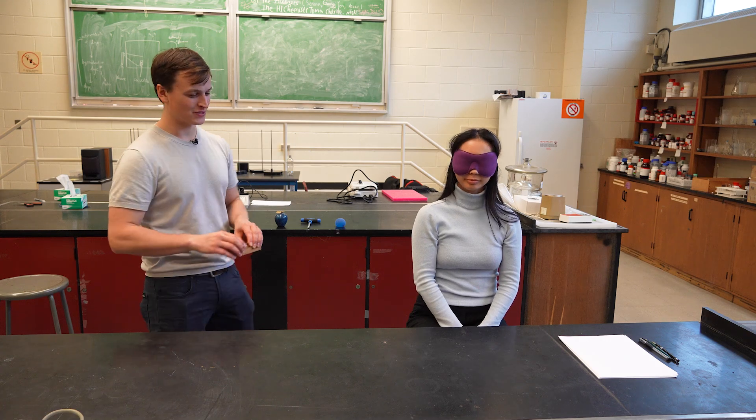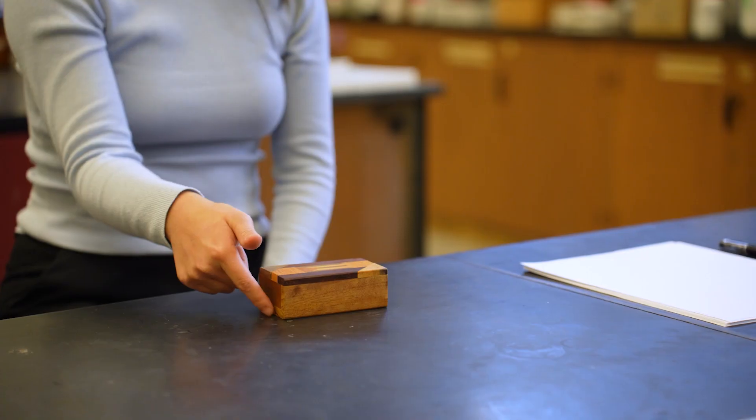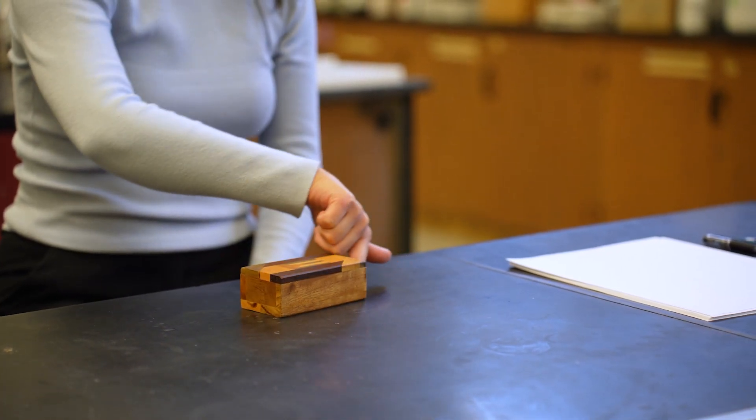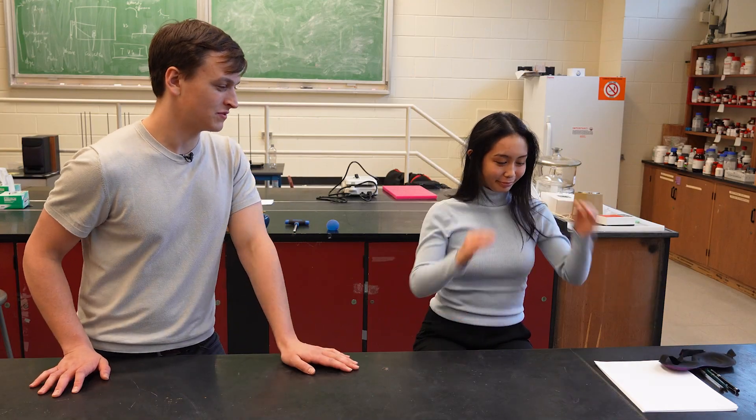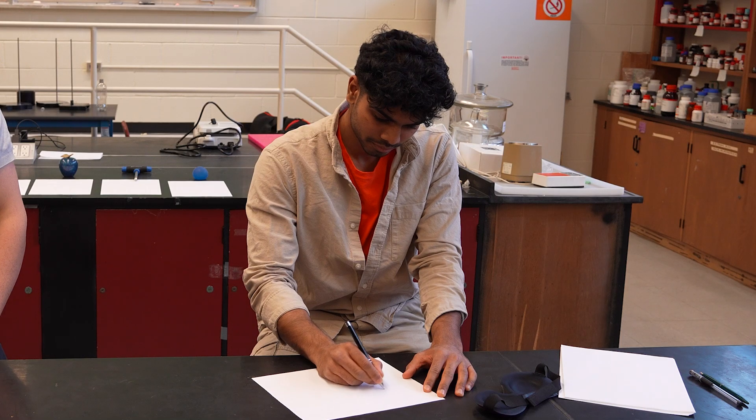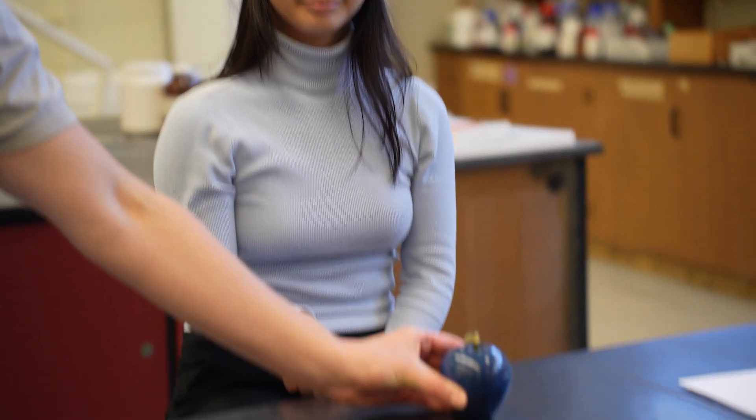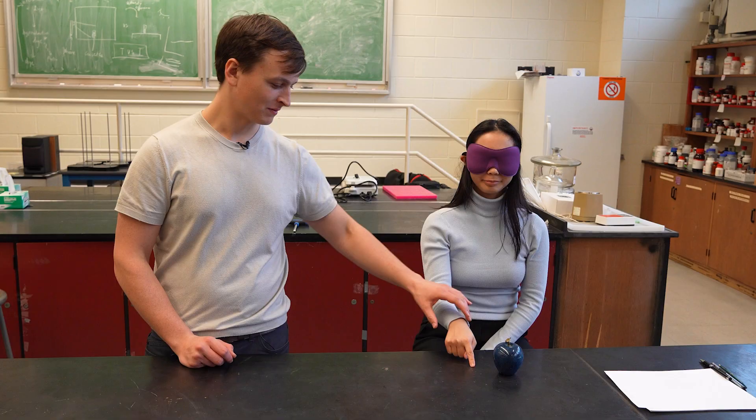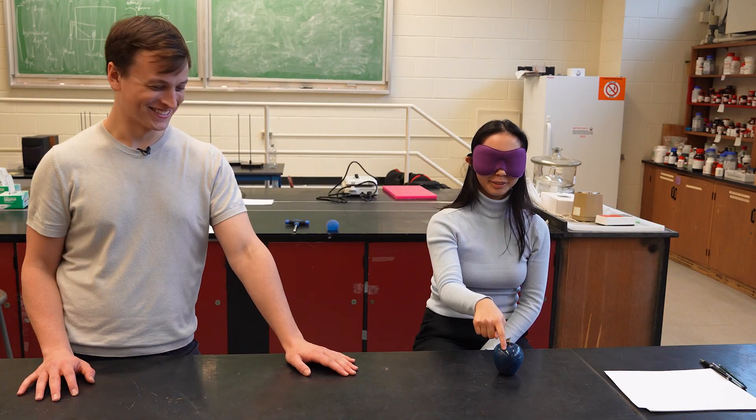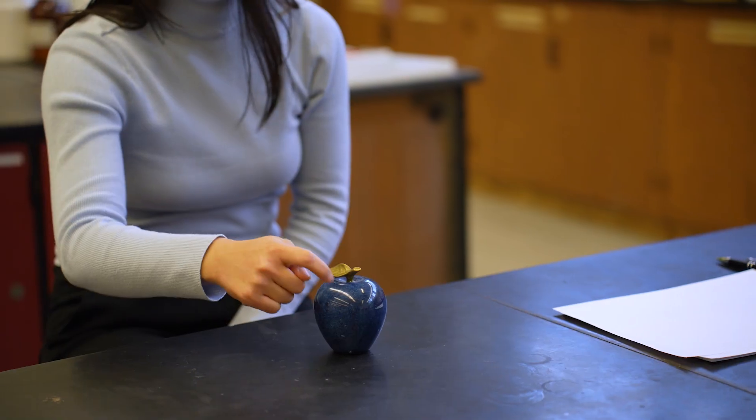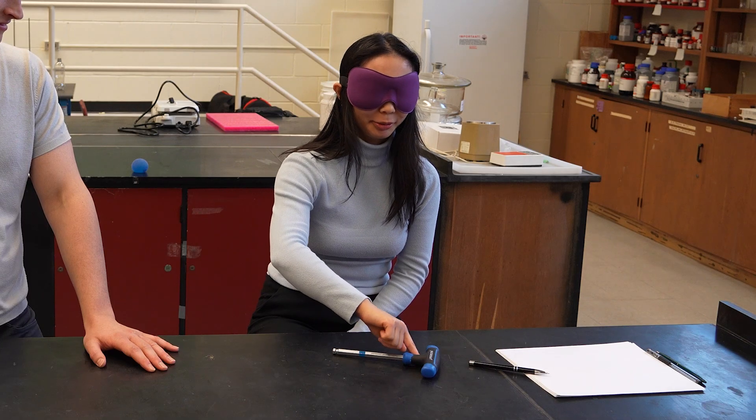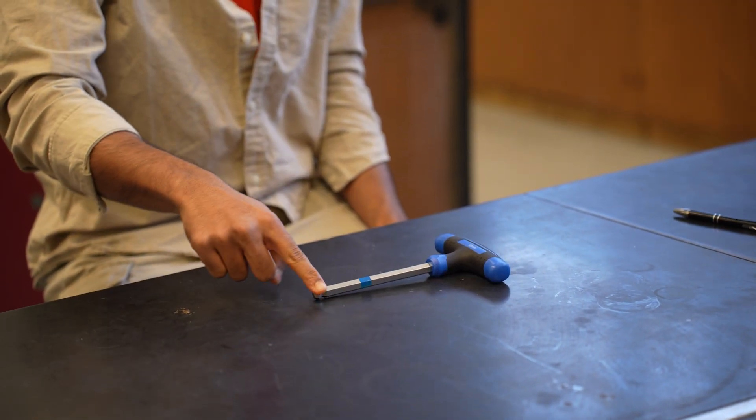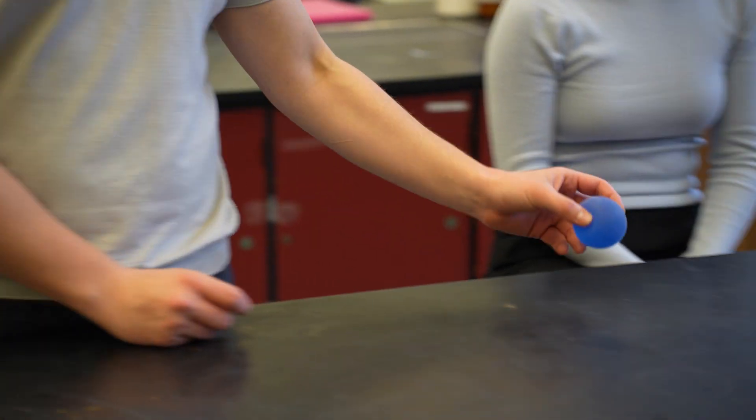Alright, Christina, here is your first object. Make sure it's only the index finger. Okay, and I want you to draw a picture of what you thought that you just felt. This is object number two. There you go. I don't know what this is. Feels like glass. Now it is time for the third object. Time for the final object, object number four.